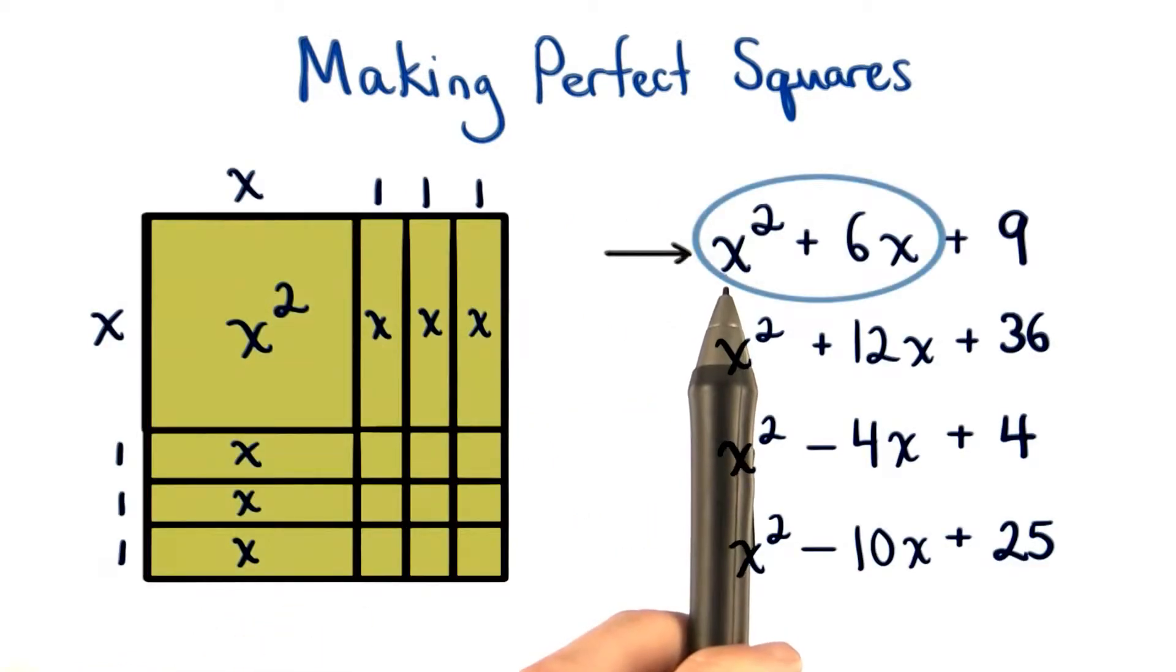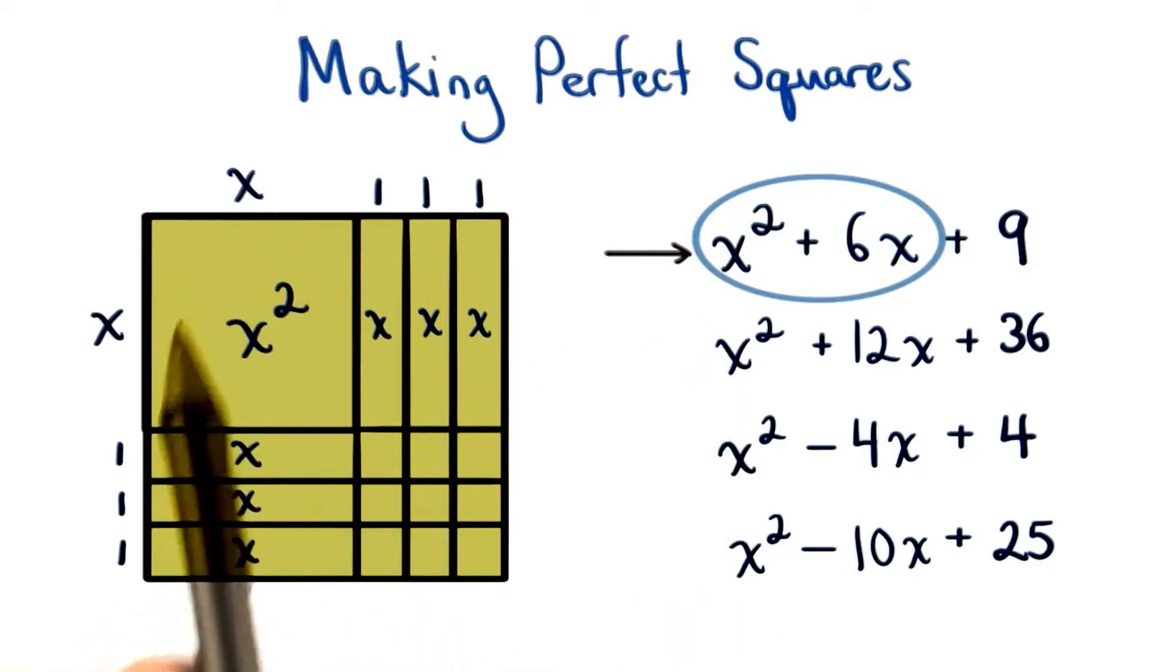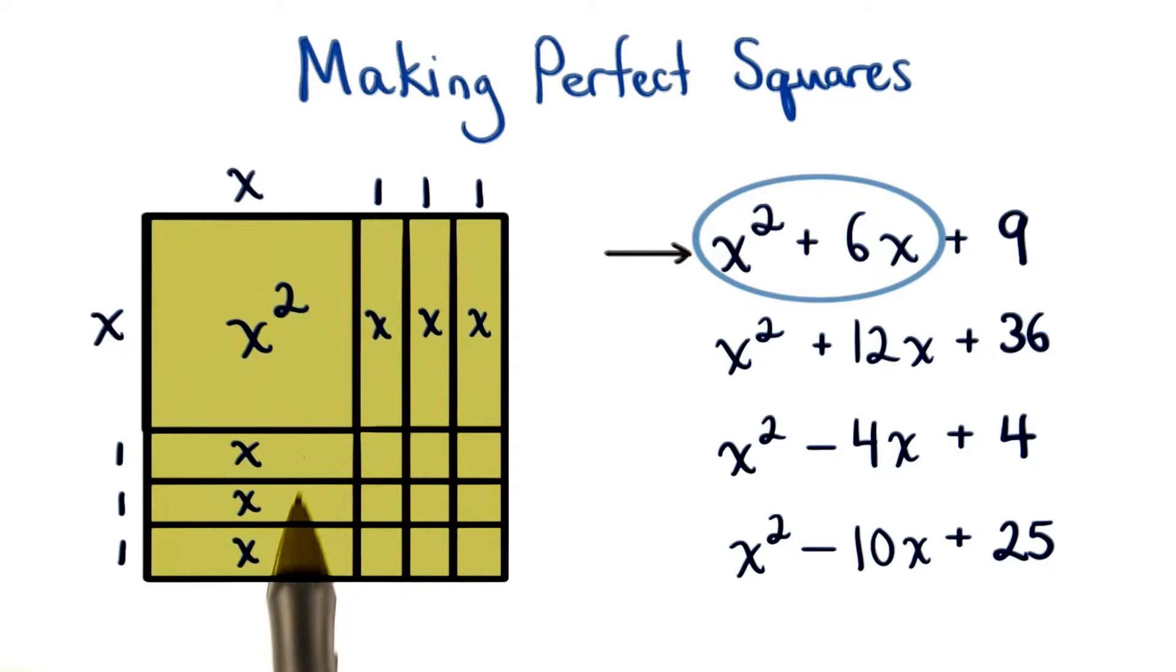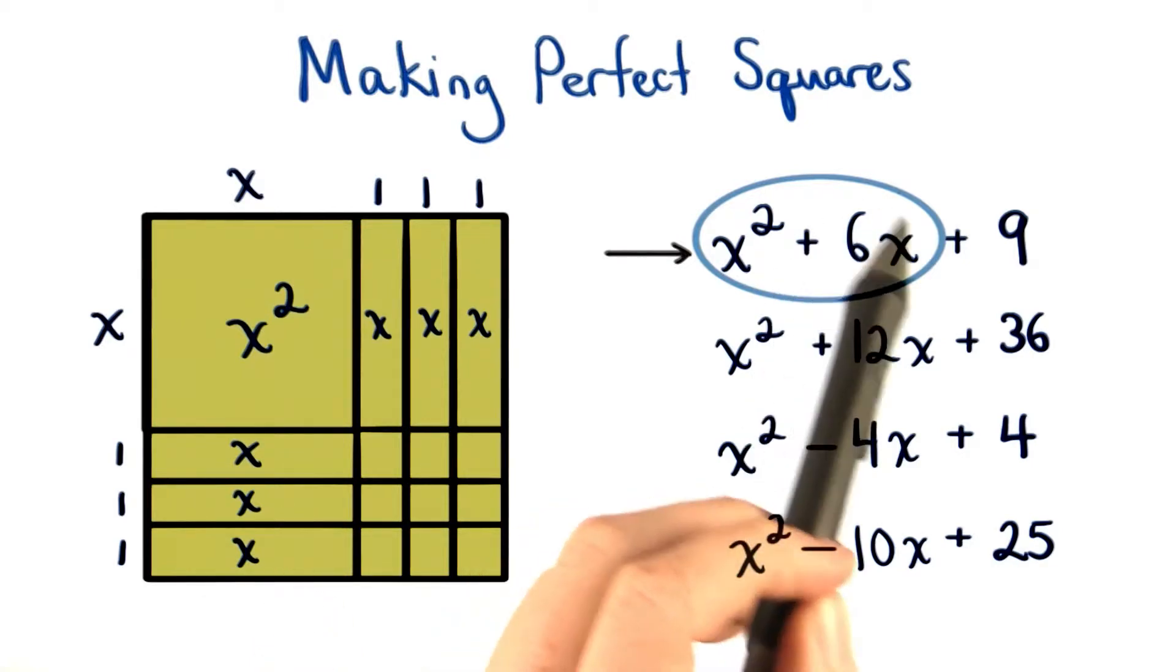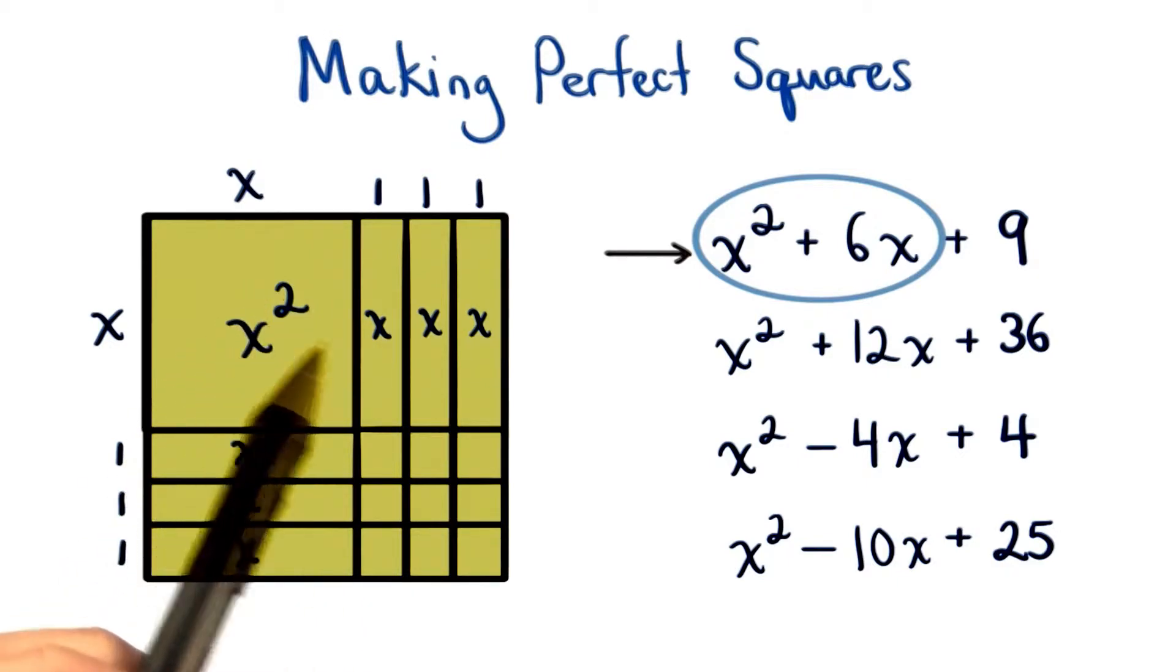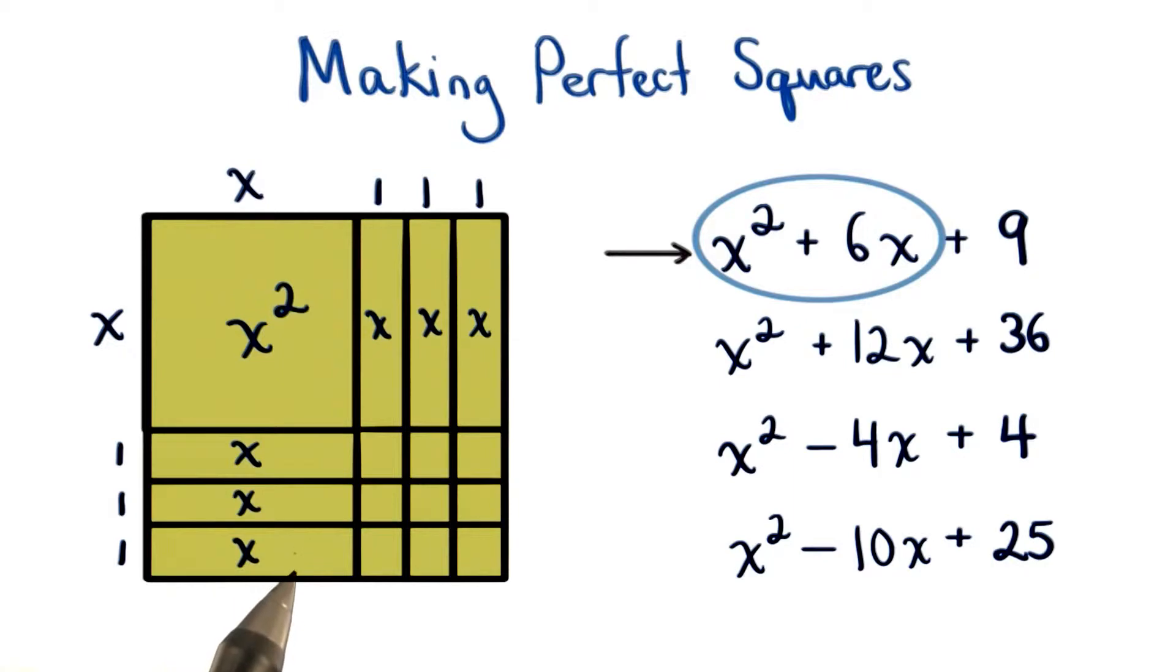For the first polynomial, we can think about having one block that's area x squared, and then six other tiles that have an area of x. We take the 6x, and we split three of the x's over here, and three of the x's over here. So we'll have x squared plus six x's, and then we'll need to add nine one pieces to complete our perfect square.